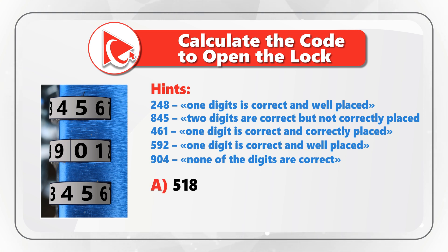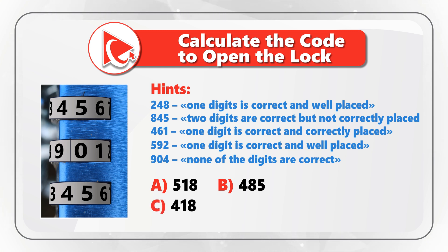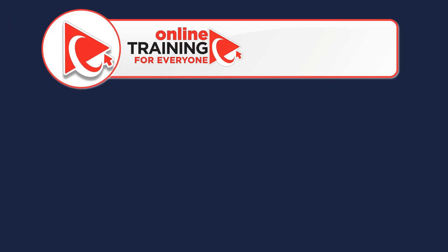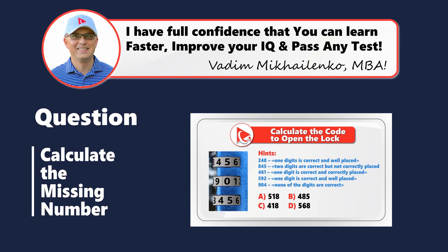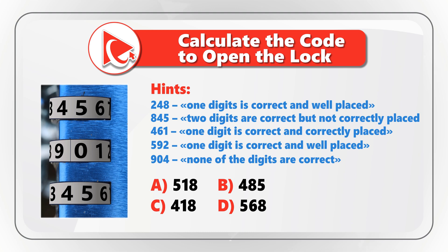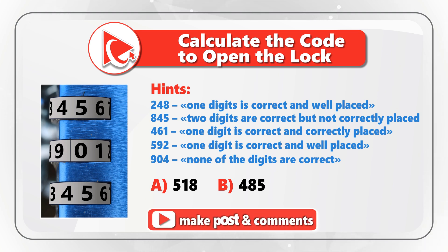Choice A: 518. Choice B: 485. Choice C: 418. And last but not least, choice D: 568. Take a close look to see if you can come up with the answer. I am pretty sure you are done solving it by now, so I am moving forward to share with you my version of the answer and solution. If you have a better way to solve it, please make sure to post in comments.